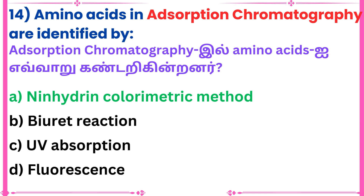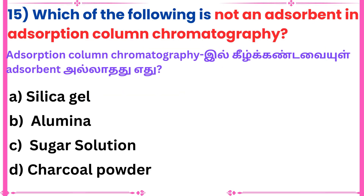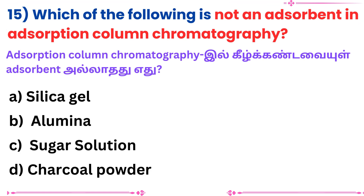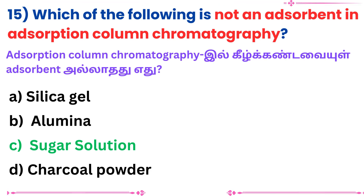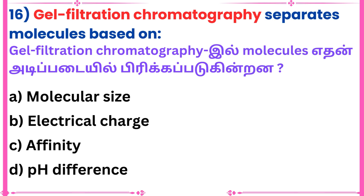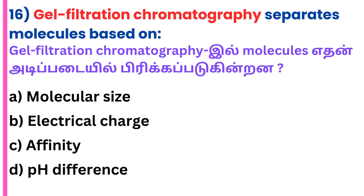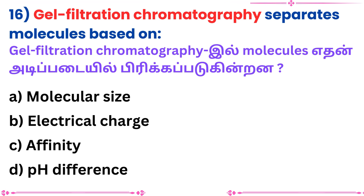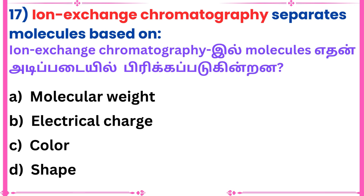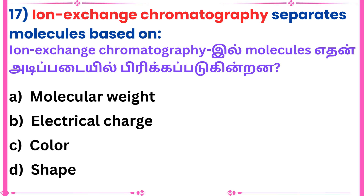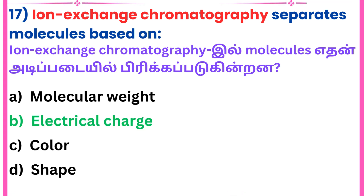Answer: Ninhydrin colorimetric method. Fifteenth question: Which of the following is not an adsorbent in adsorption column chromatography? Answer: Sugar solution. Sixteenth question: Gel filtration chromatography separates molecules based on — Answer: Molecular size. Seventeenth question: Ion exchange chromatography separates molecules based on — Answer: Electrical charge.